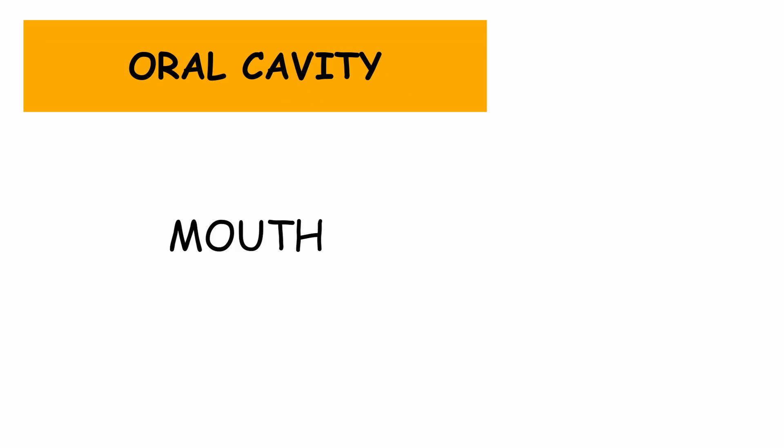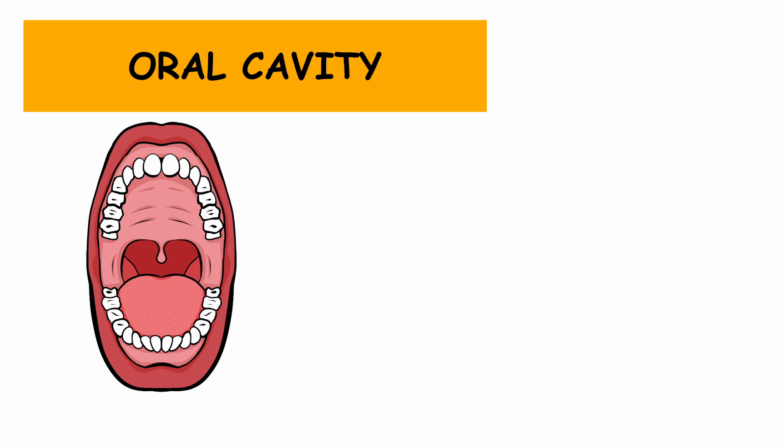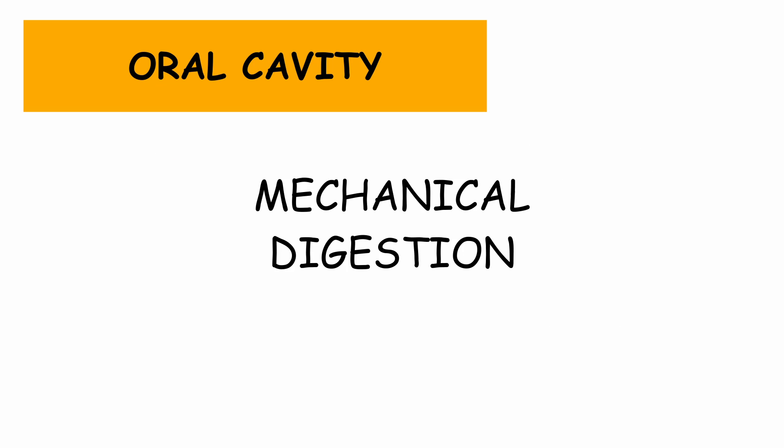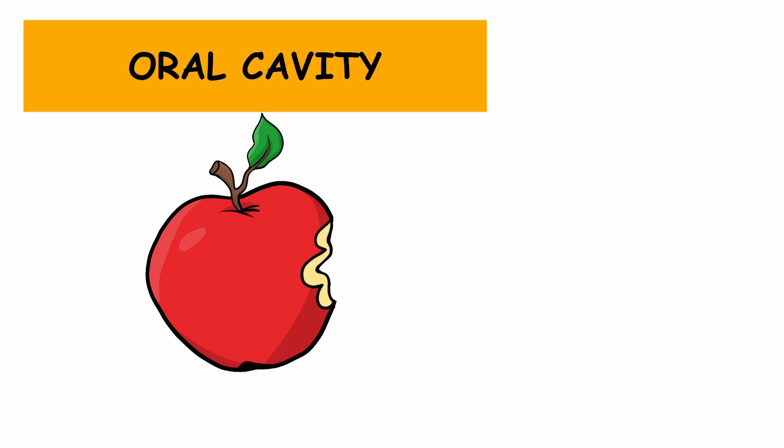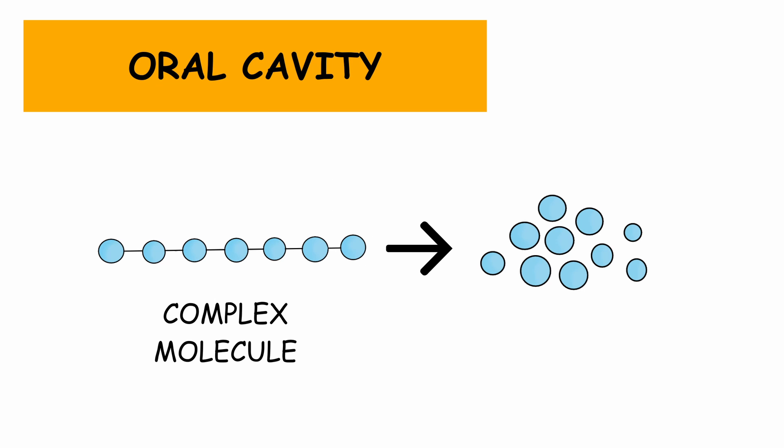Let's start from the top. The oral cavity is nothing but a fancy name for our mouth. The mouth is the site of digestion where both mechanical and chemical digestion occurs. Mechanical digestion is the physical breakdown of large food chunks into smaller ones, whereas chemical digestion refers to the chemical breakdown of complex macromolecules into smaller digestible molecules.